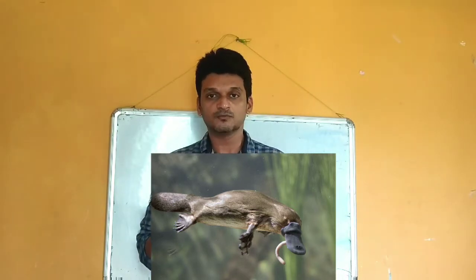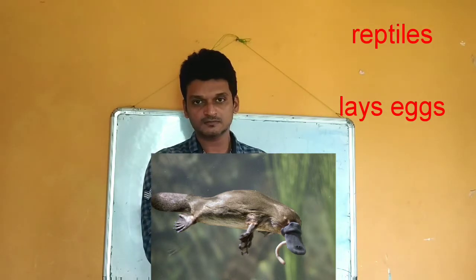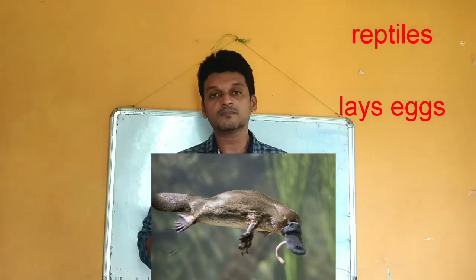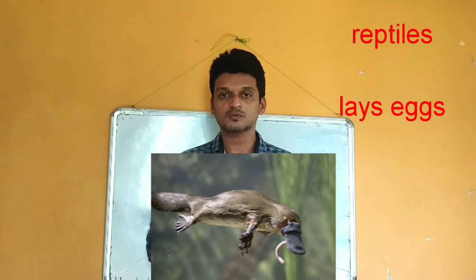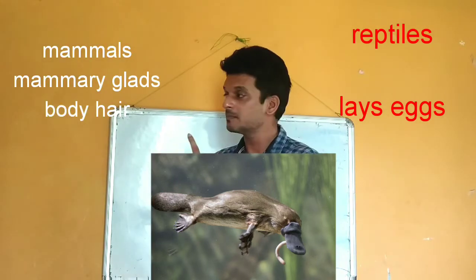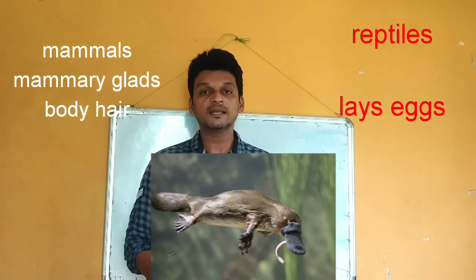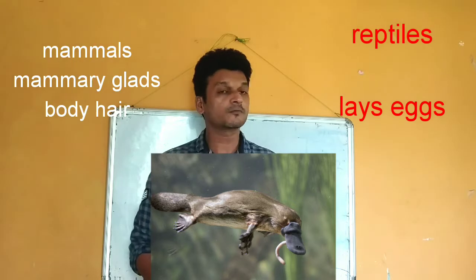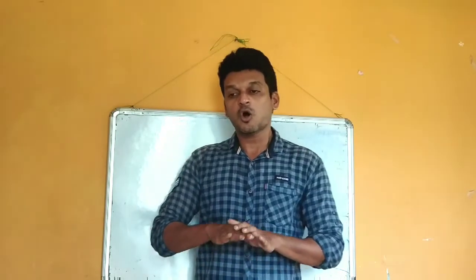In this animal there are some characteristics that belong to reptiles — it lays eggs. But at the same time it also shows characteristics of mammals, such as the presence of mammary glands and body hair. This fact indicates that mammals are evolved from reptiles.